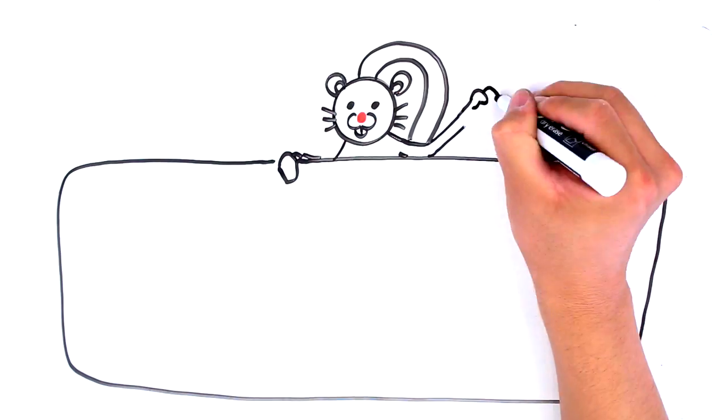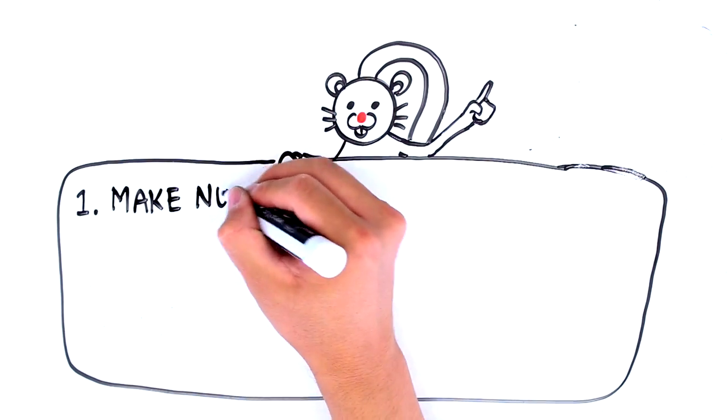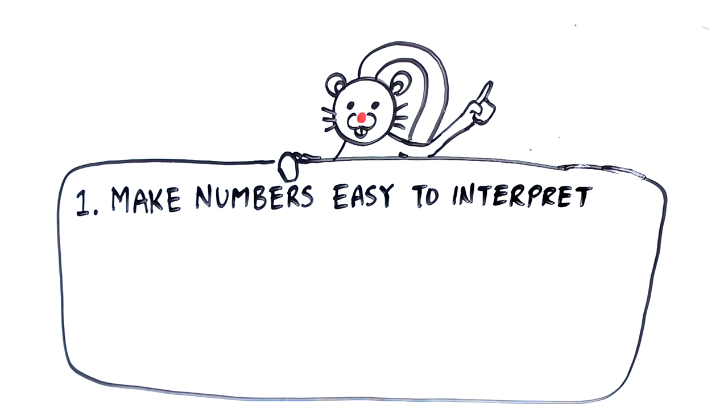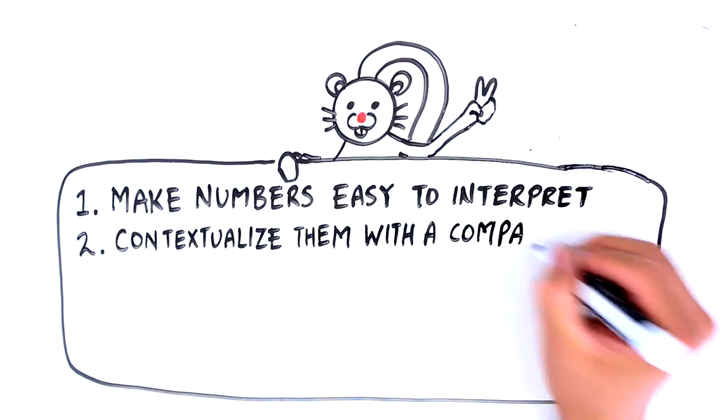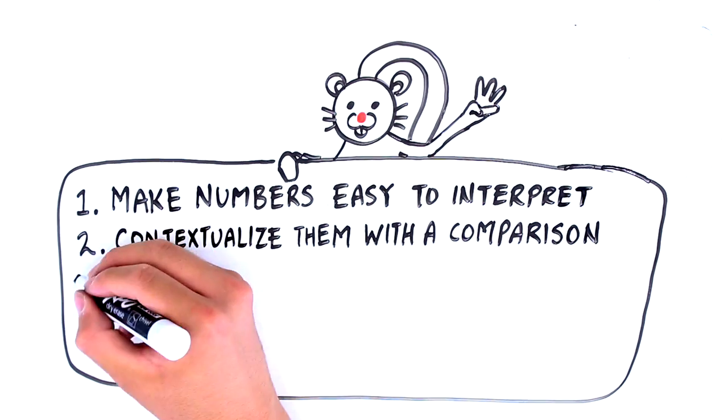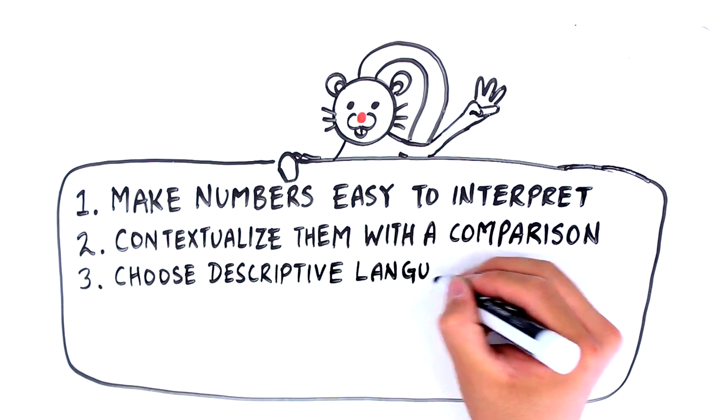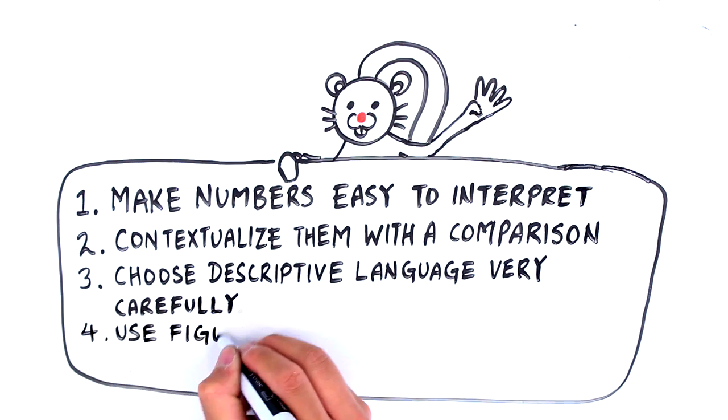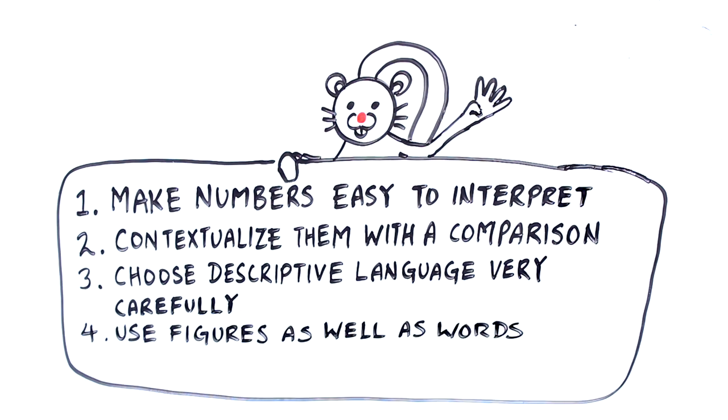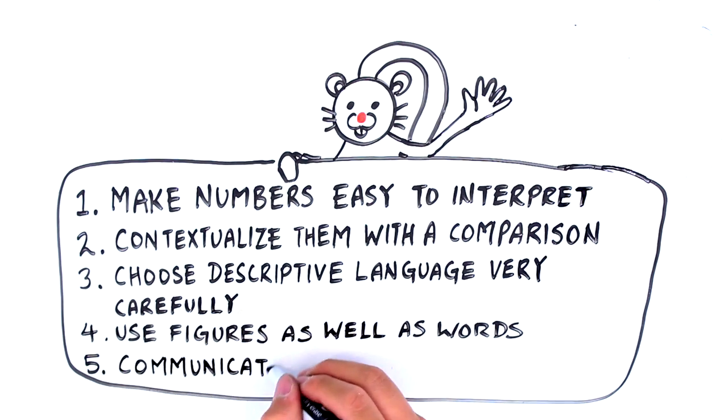She says it is important to 1 make numbers easy to interpret, 2 contextualize those numbers with a comparison, 3 choose descriptive language very carefully, 4 use figures as well as words, and 5 communicate timelines.